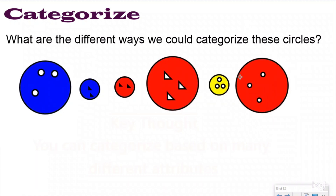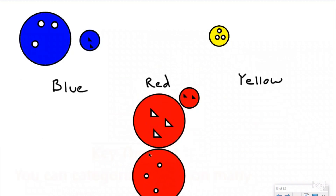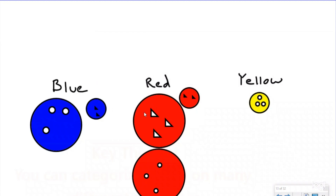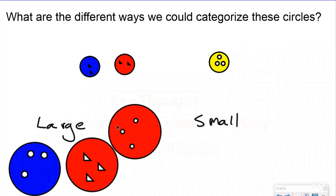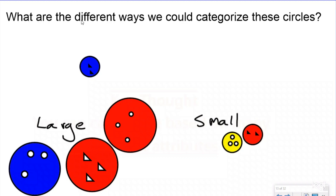Here are my circles. The first way I noticed is color — color just pops to my eye. I see some blue, some red, and one yellow. So if I categorize by color, I put all the red together, separate the yellow, and put the blue together. You can also categorize by size: large circles in one group and small circles in another.